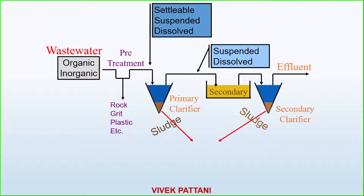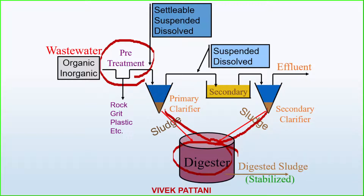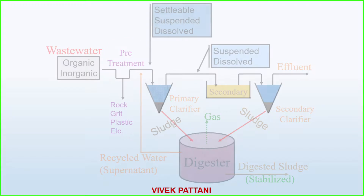The basic process of sludge digestion: this diagram shows a primary wastewater treatment pre-treatment with sludge received. After secondary treatment the sludge is received and transferred to the digester. The digester produces stabilized sludge, and part of it is released in the form of gas. Recycled water may also be used in a similar pattern.